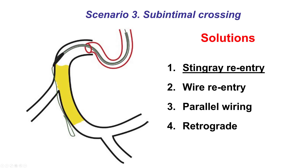The third option is the wire going sub-intimally distal to the distal cap. It is important to not let the wire go too far distally, but stop it just distal to the distal cap so the dissection area is minimized. The most common solution for this is to use the Stingray system for reentry. There are wire-based entries, or if everything fails, going retrograde, but in most cases the Stingray is the preferred approach.